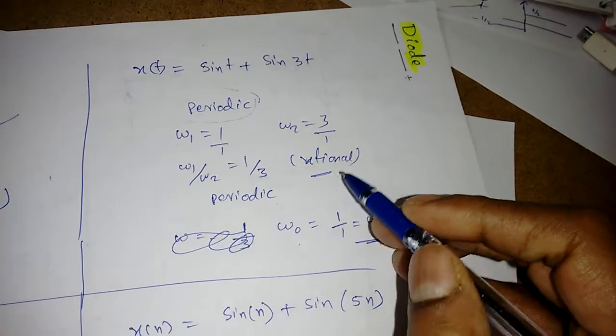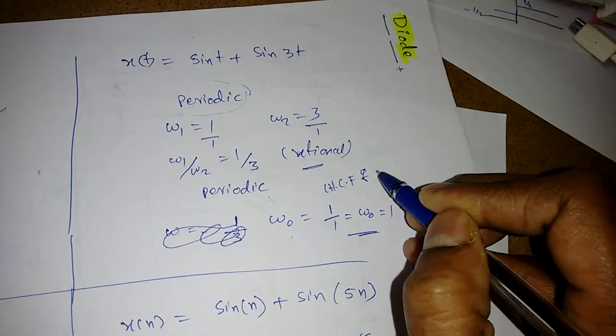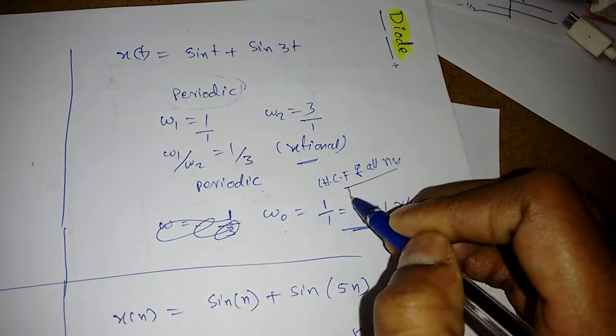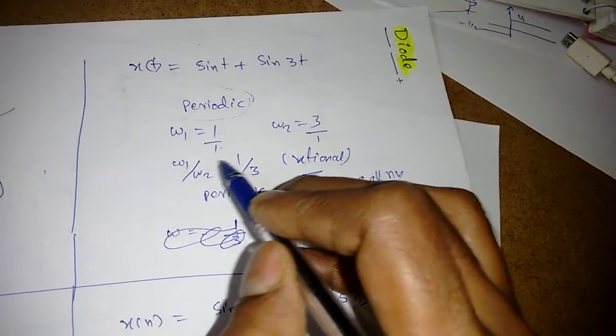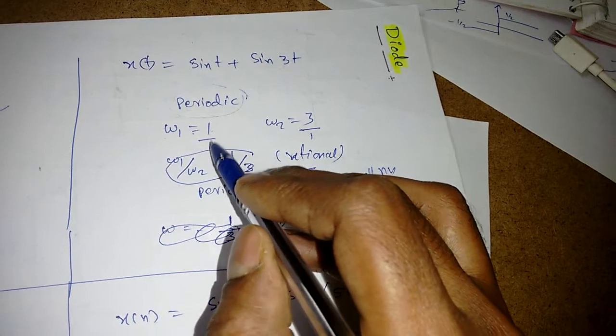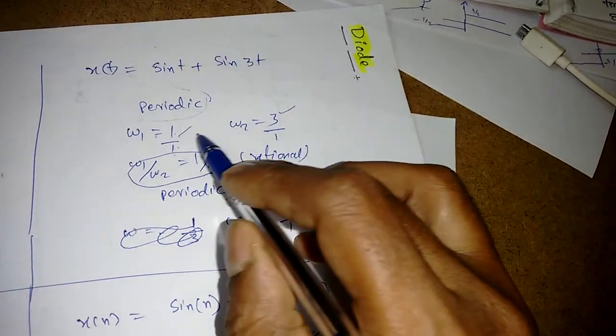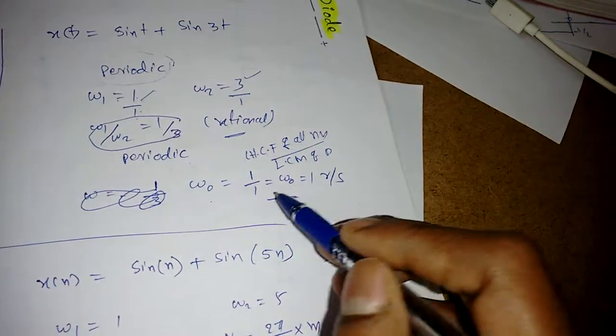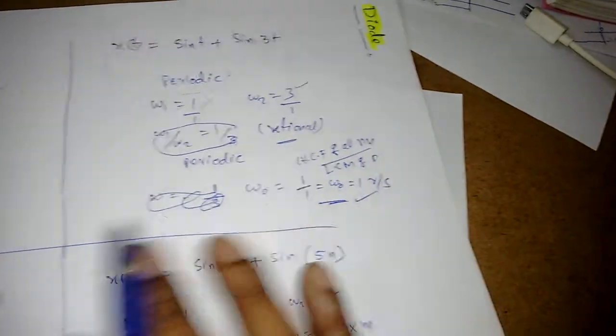How to find period: omega naught is equal to highest common factor of all numerators by LCM of all denominators. So 1 by 1, 3 by 1. We have to take omega 1 first. So omega 1 is 1 by 1, omega 2 is 3 by 1. For the denominators we can enumerate it 1 into 1, 3 into 1. So 1 is a common factor. LCM for 1, 1 is 1. So omega naught is 1 radian per second.